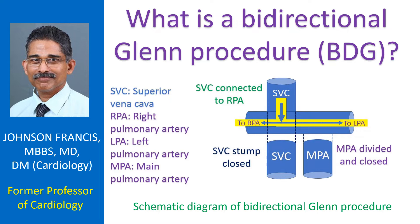The superior vena cava is the blood vessel returning oxygen-poor blood to the heart from the upper part of the body. The right pulmonary artery is the blood vessel carrying blood to the right lung for oxygen enrichment. The main pulmonary artery, which takes blood from the right ventricle to the lungs, may be closed after this procedure. The right ventricle is the right lower chamber of the heart.